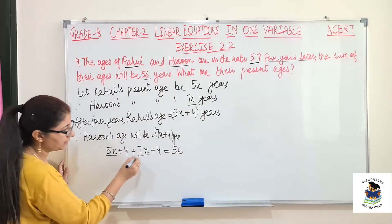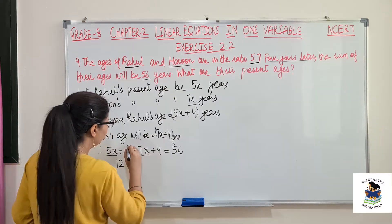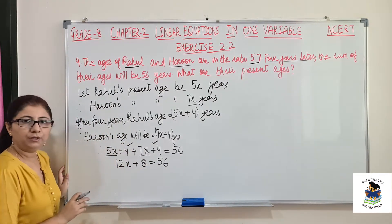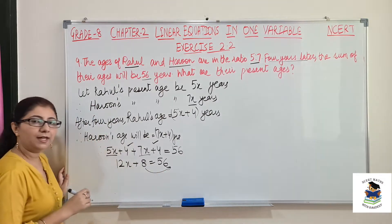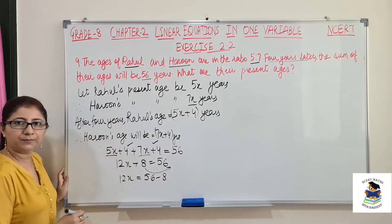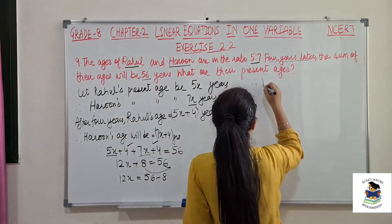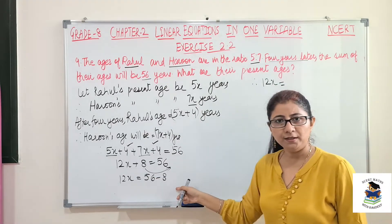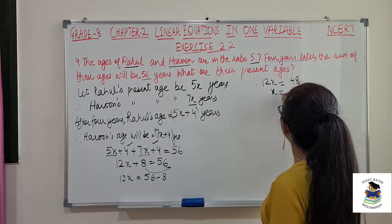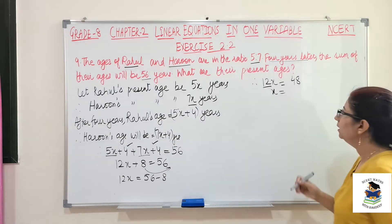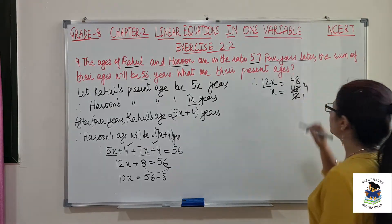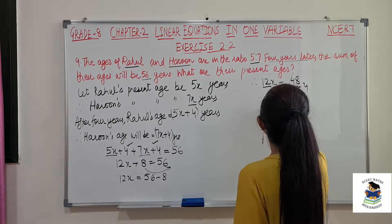Now let's solve this. 5x plus 7x gives 12x, and 4 plus 4 gives 8, so we have 12x plus 8 equals 56. The 8 goes to the other side and is subtracted: 12x equals 56 minus 8, which is 48. Since 12 is multiplied on this side, it will be divided on the other side: x equals 48 by 12. Since 12 fours are 48, therefore x equals 4.